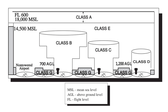Class D airspace is typically established around any airport with a functioning control tower that does not see significant IFR approaches which would make Class B or C more appropriate, usually because there is no scheduled commercial passenger service. Class D airspace is generally cylindrical and normally extends from the surface to 2,500 feet above the ground, with an outer radius generally of 4 nautical miles. Airspace within the given radius but in surrounding Class C or Class B airspace is excluded. Class D reverts to Class E or G when the tower is closed. Two-way communication with ATC must be established before entering Class D airspace, but no transponder is required. VFR cloud clearance and visibility requirements are the same as Class C.